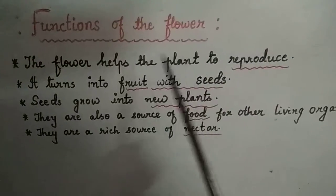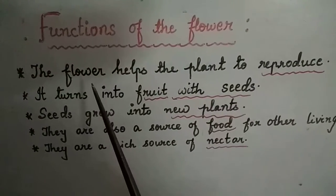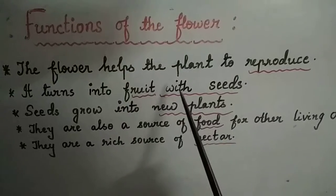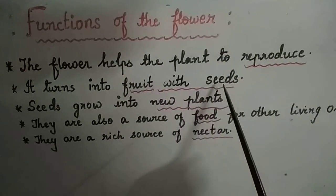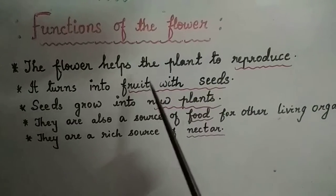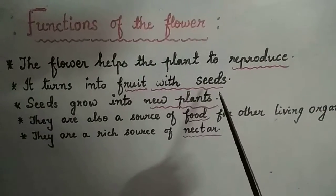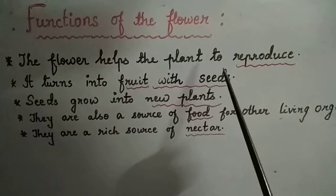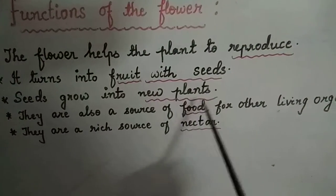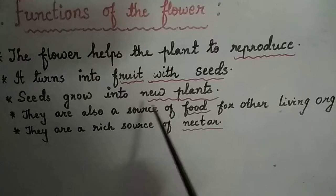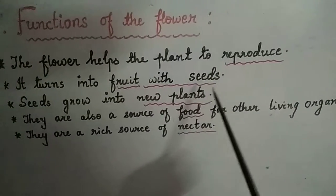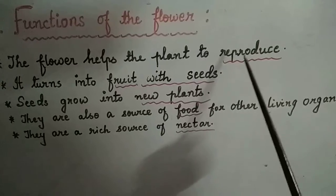How does it happen? First, the flower turns into a fruit with seeds. That means it will turn into a fruit and the fruit contains seeds. Then those seeds will grow into new plants. So in this way the process of reproduction is performed.